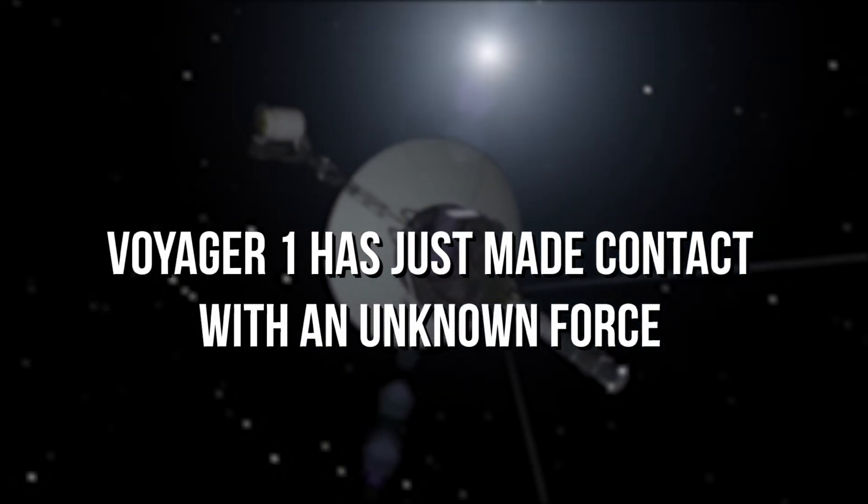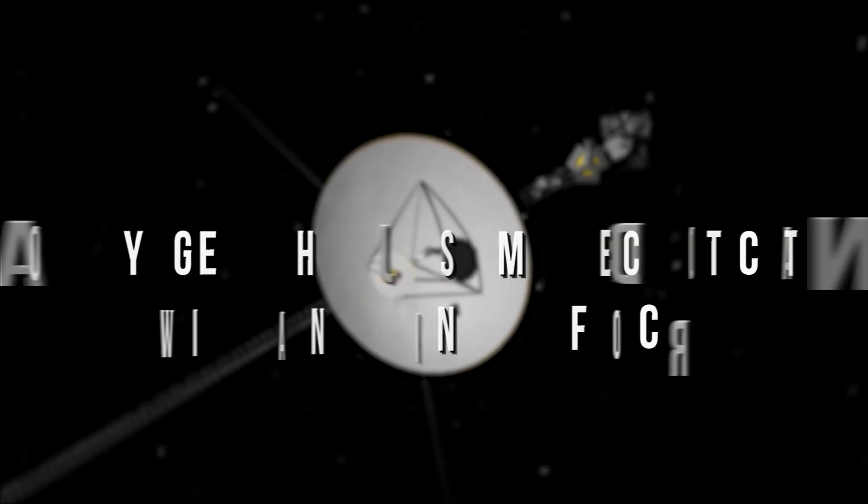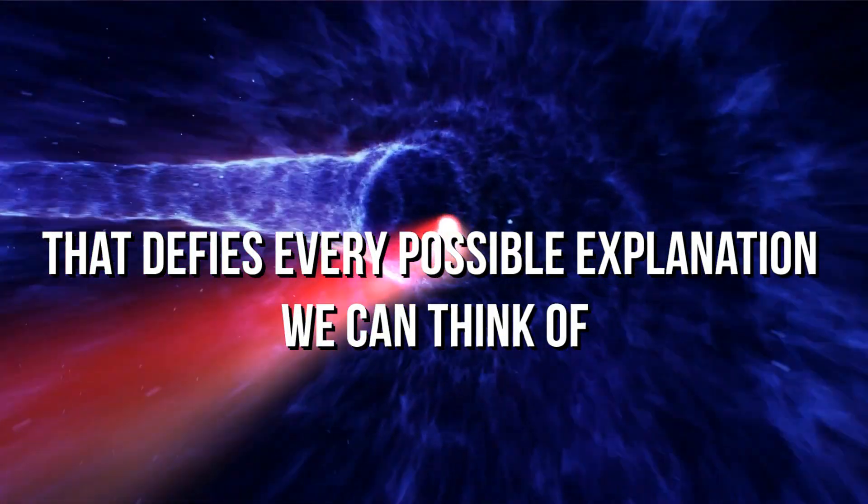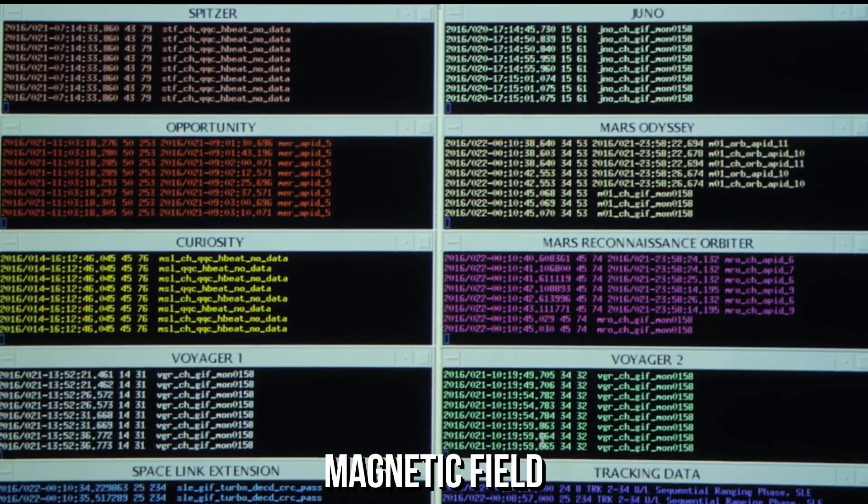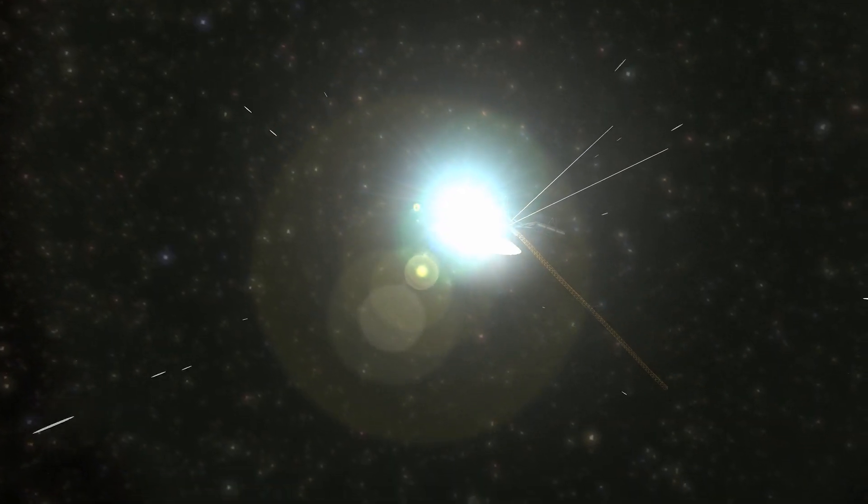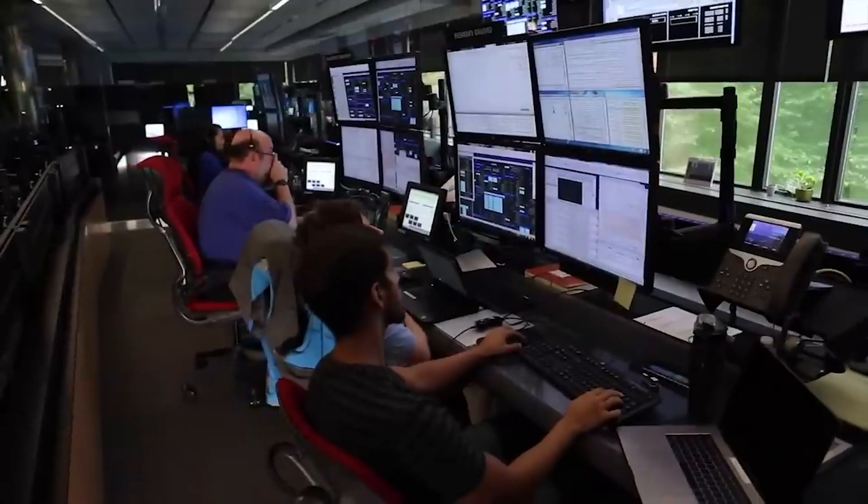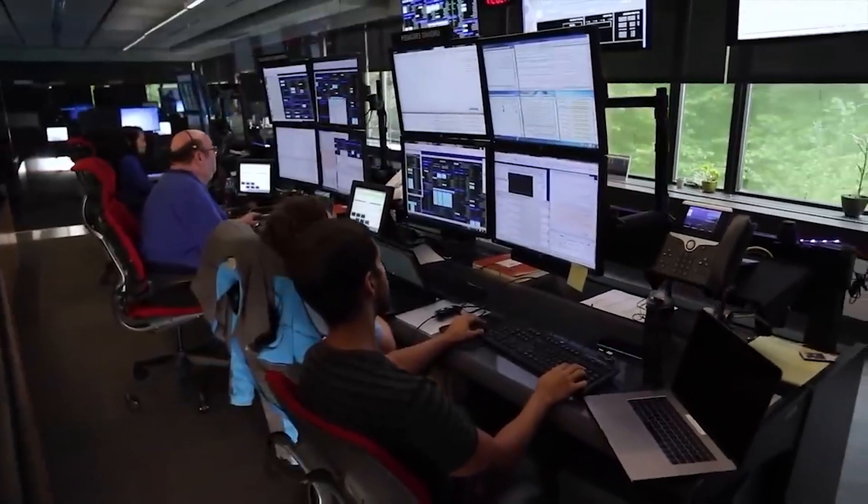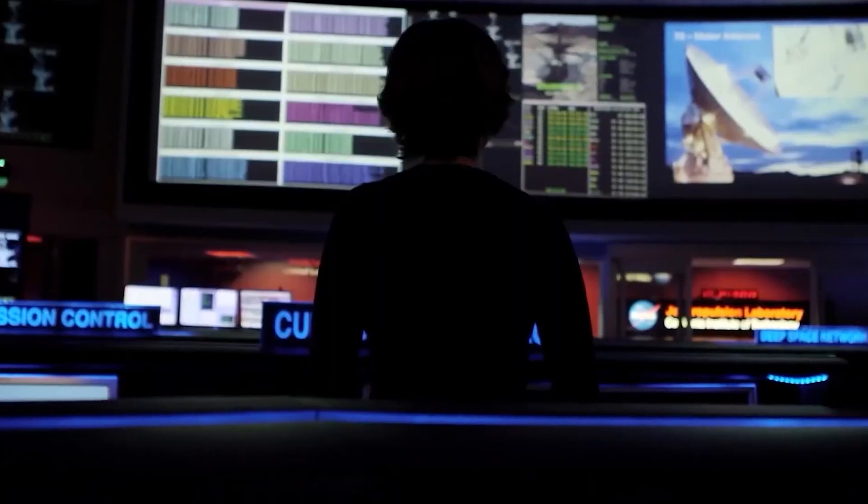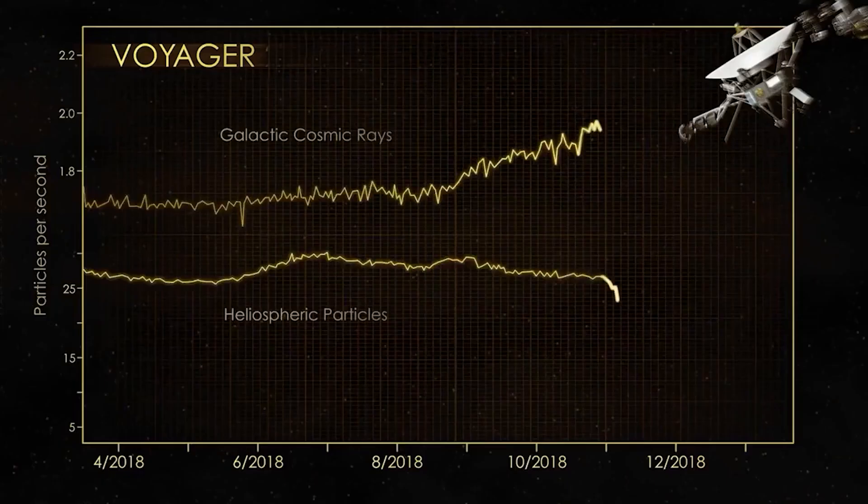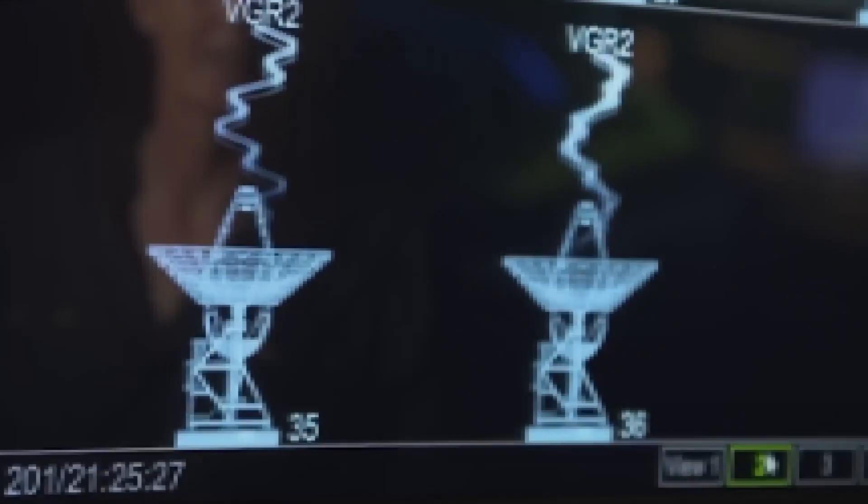Voyager 1 has just made contact with an unknown force that defies every possible explanation we can think of. The spacecraft's instruments recorded a sudden and unexpected shift in the magnetic field, followed by a burst of high-energy particles that have left scientists baffled and excited about what could be causing this strange phenomenon in the depths of space. Researchers formulated theories about what Voyager 1 had encountered as the data poured in.